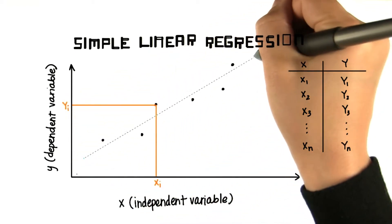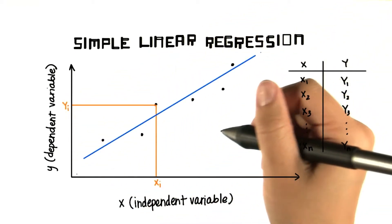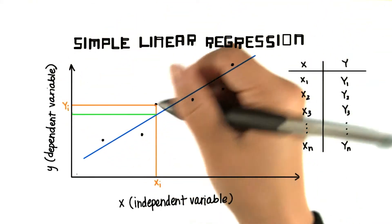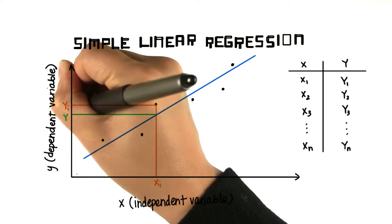When we calculate the regression line, we get our expected y values. For this x value here, the expected y value is here. And we denote this by y hat.